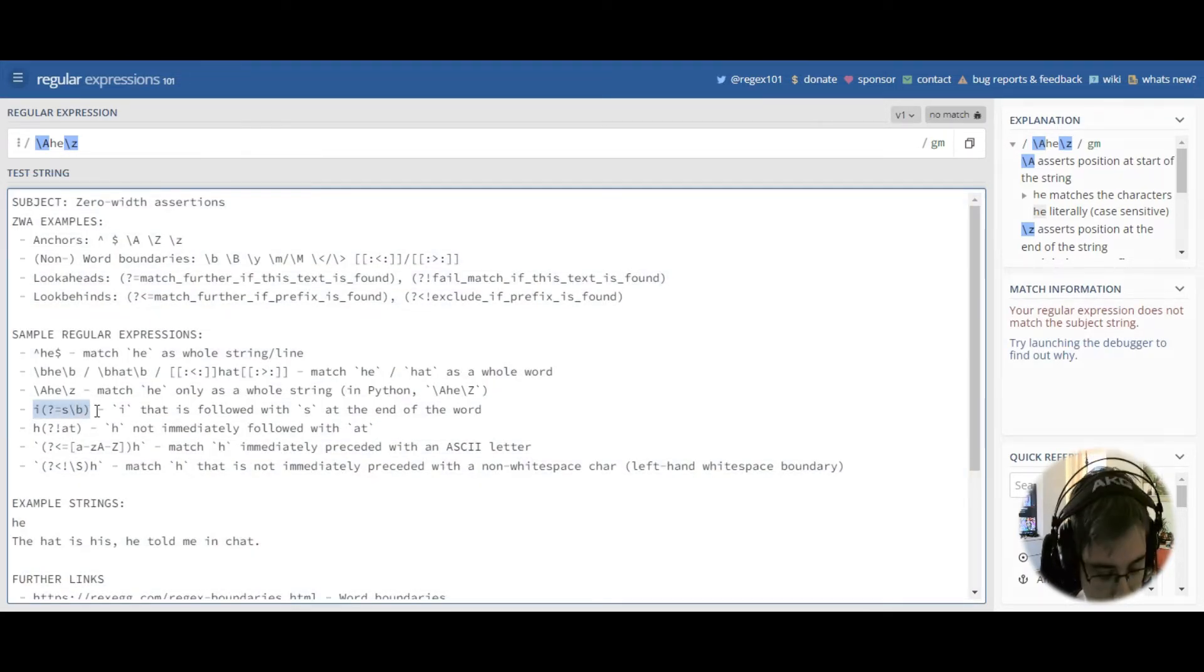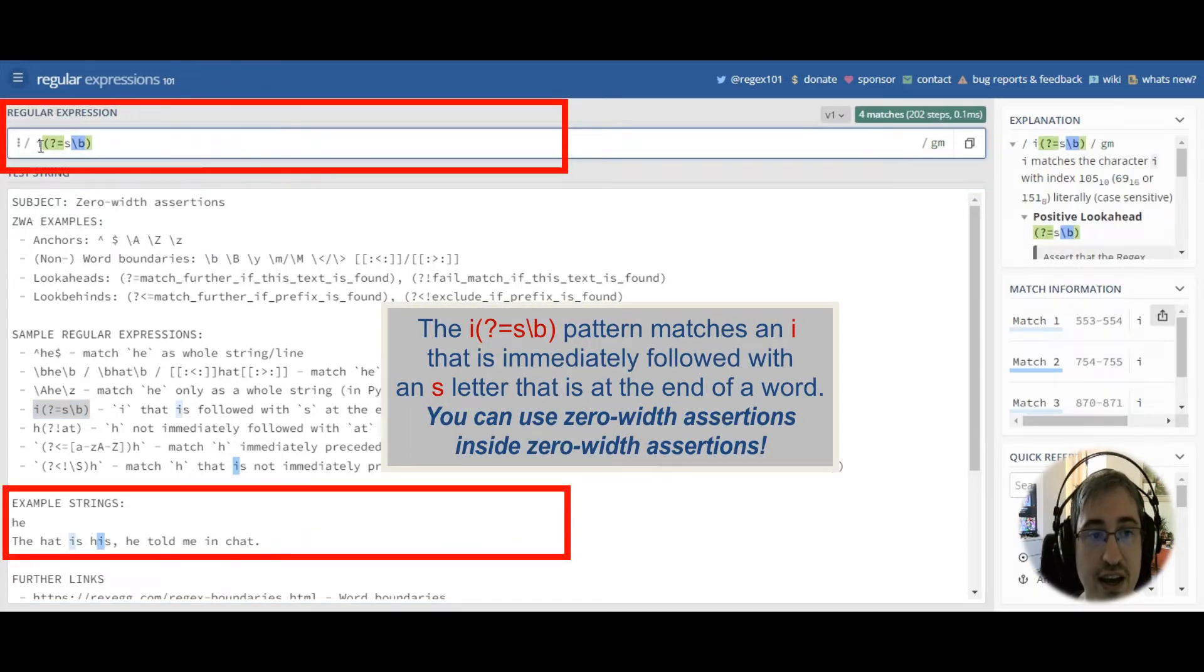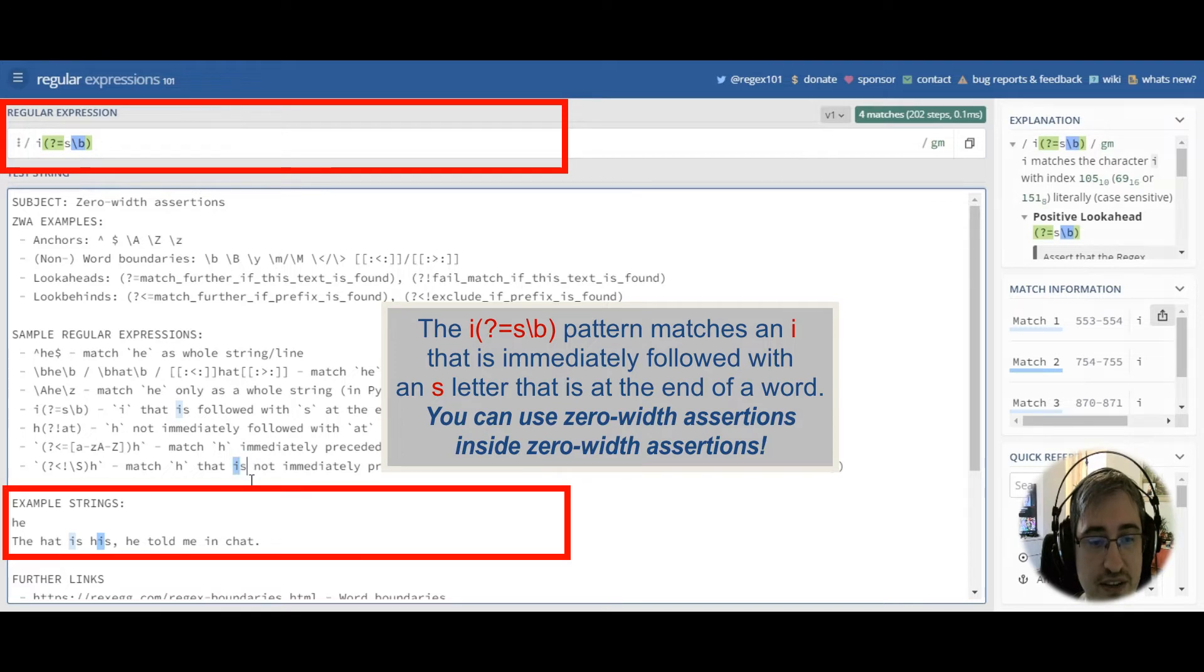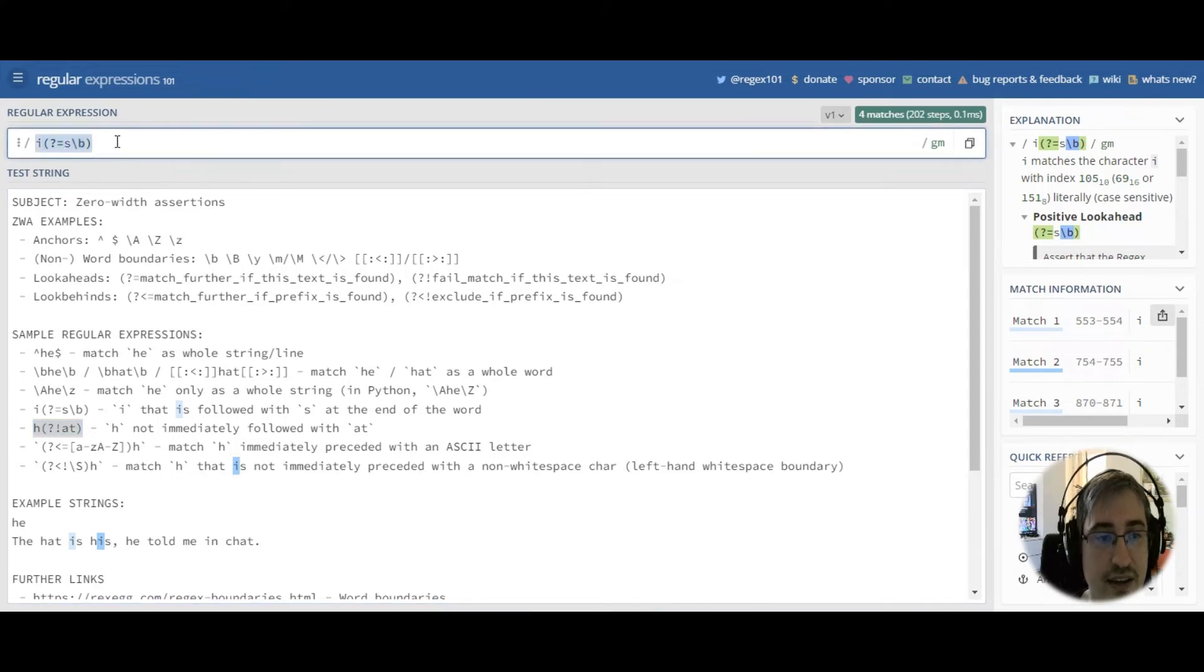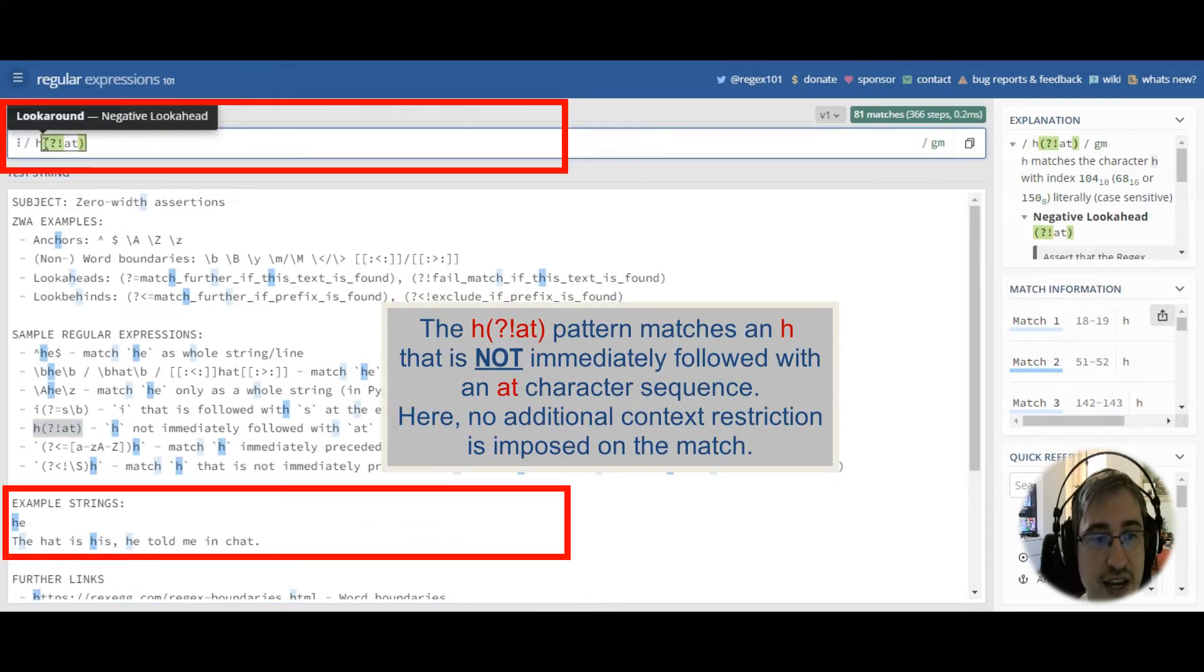And now let's see how positive look-arounds work. So, this pattern matches any I character that is immediately followed with the letter S that is followed with the word boundary location. And that's why we've got a match in is, and we won't have a match in ish for example. Now let's check a negative look-ahead.